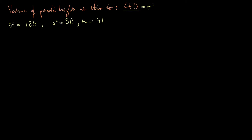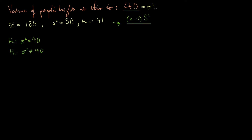We can use a key fact we've just learned regarding the sample variance. If we suppose for a moment that this person is telling the truth — under our null hypothesis, sigma squared equals 40 — then we know that (n minus 1) times our random variable S squared, which represents the distribution of sample variances, divided by the true variance of 40, will be distributed as a chi-square distribution with 40 degrees of freedom.